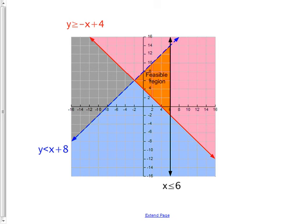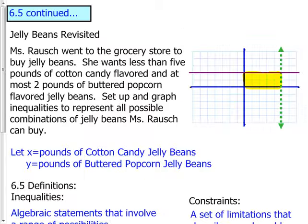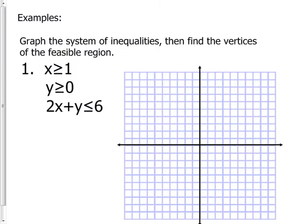Here's the big finish — listen closely. The corners are the key. The answer to real-world optimization questions will always be one of the corners of the feasible region. What's the official math name for corner? Vertex — or vertices for the plural. So one of the vertices of the feasible region will be your answer.